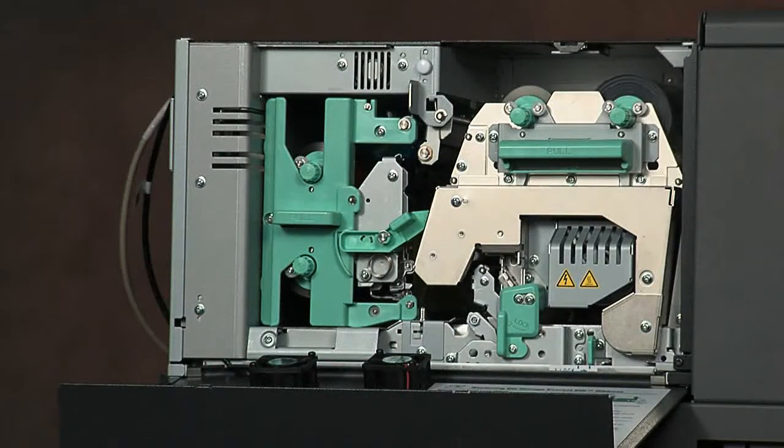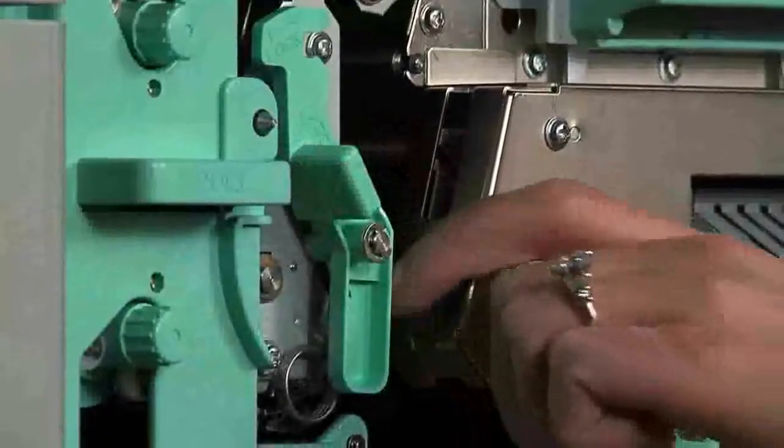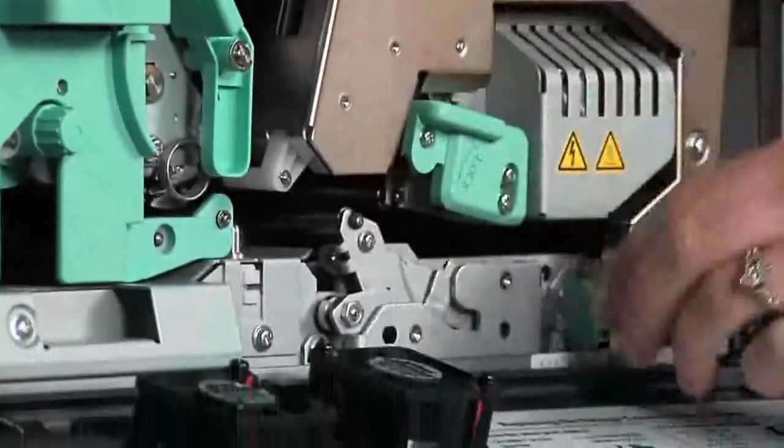The retransfer ribbon carrier is on the right side of the printer. Make sure latch one is open. Turn latch two clockwise.